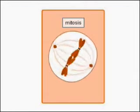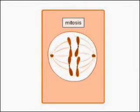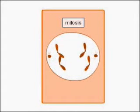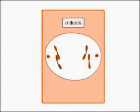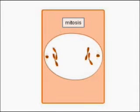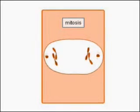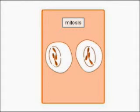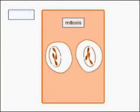Fibers of the spindle pull single chromatids of each chromosome towards the opposite spindle poles during mitosis. After mitosis, the daughter cells are still diploid 2N.